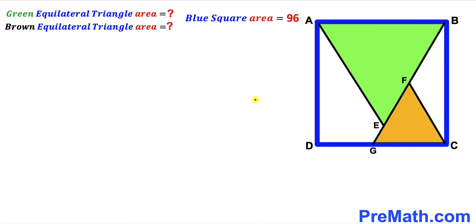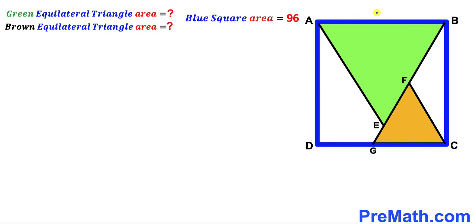Here's our very first step. Before we can calculate the area of these two triangles, we must find the side length of these triangles. We can observe that this side of the blue square is equal to the side length of the green shaded triangle. I'm going to label this side length of the blue square as 2a across the board, since we are dealing with a square. I took 2a on purpose — you will see that 2a is going to make our life a lot simpler. So the side length of this green equilateral triangle turns out to be 2a.